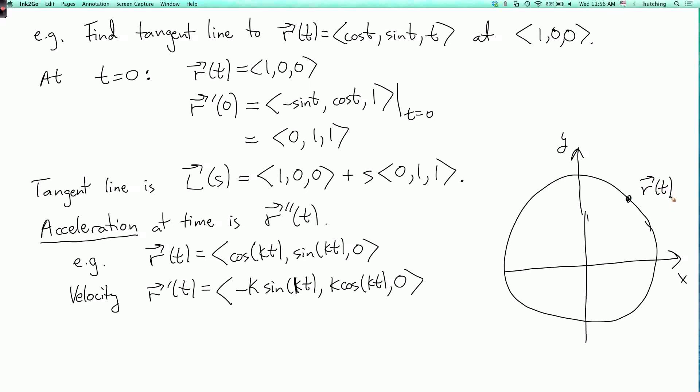So here's our point R of t. So really, I'm identifying this with a vector from the origin to this point. And the velocity vector is tangent to the circle. So this is R prime of t, and it has length k, which corresponds to the fact that we're moving at speed k.